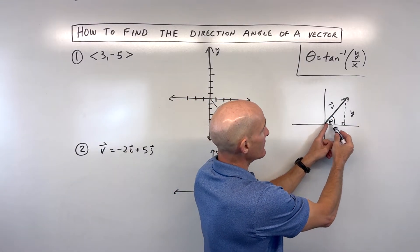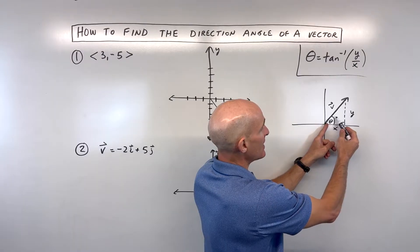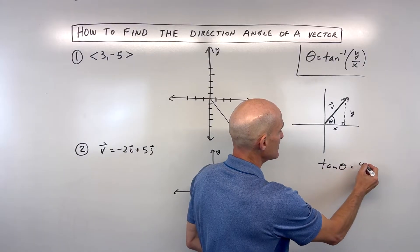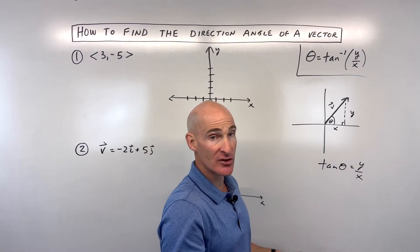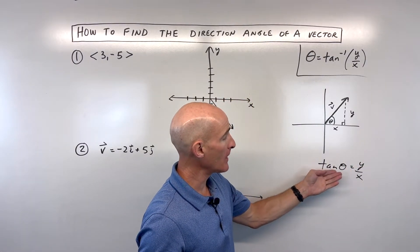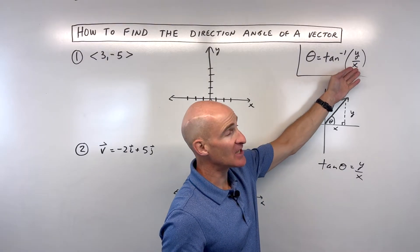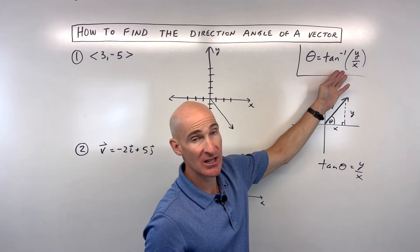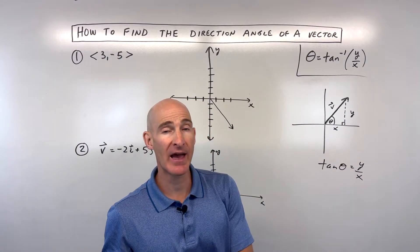And we know that this angle here, the tangent of this angle, is the opposite side over the adjacent. So we have tangent theta equals y over x, or opposite over adjacent. But to solve for the angle, we have to do the tangent inverse. So whenever we're solving for the direction angle of a vector, we can do the tangent inverse of the y component divided by the x component.